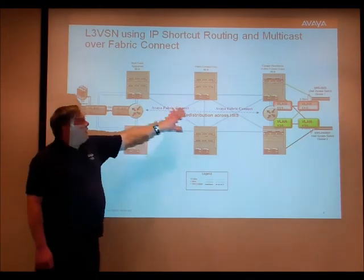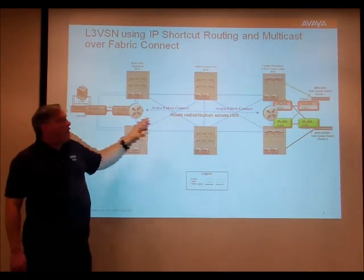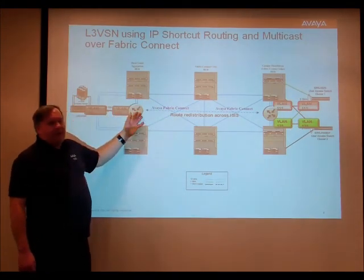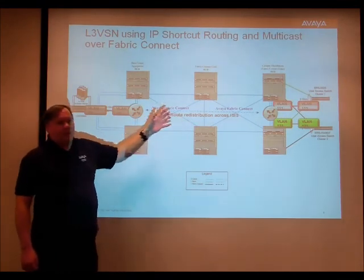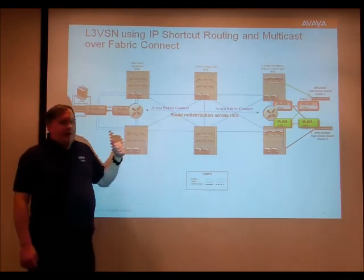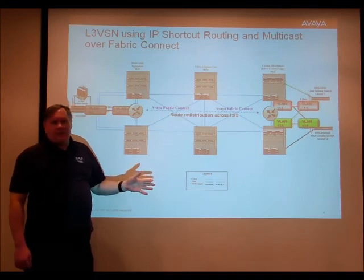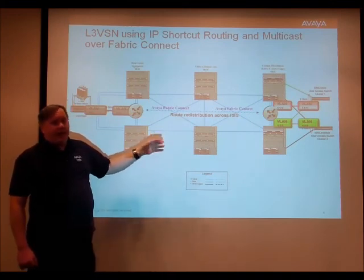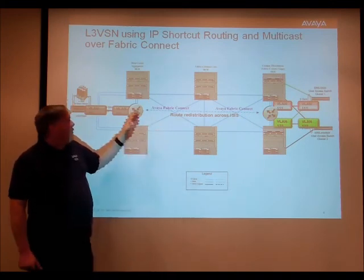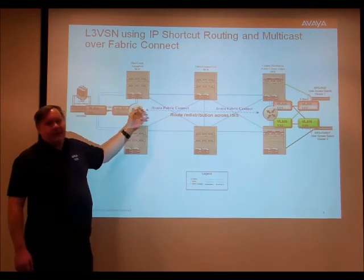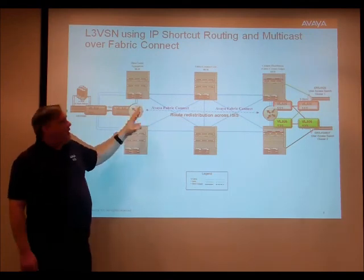And it will learn across the network what VLANs are out there. It can redistribute those routes across the network. I do not have to add BGP, OSPF, RIP, or any other routing protocol. I can choose to, and I can redistribute routes between those and ISIS back and forth if I choose to.